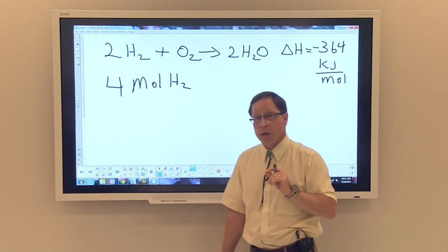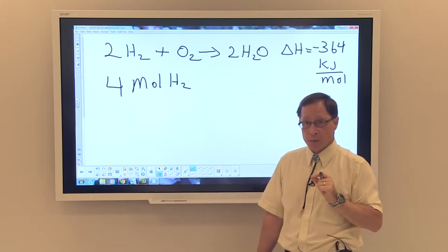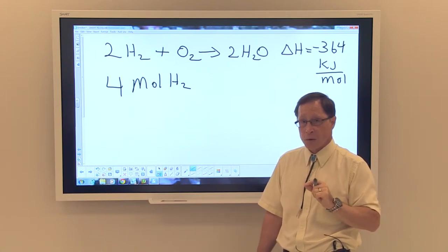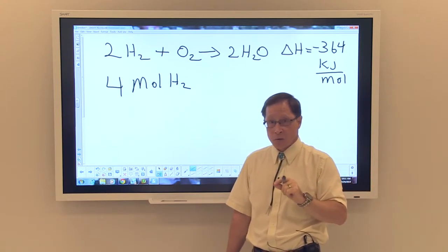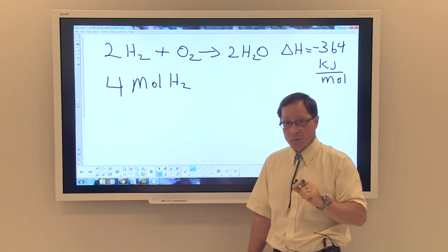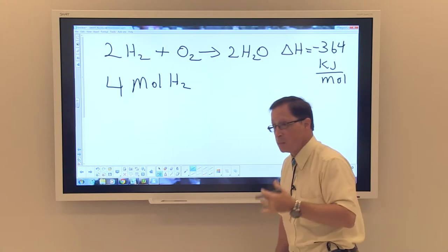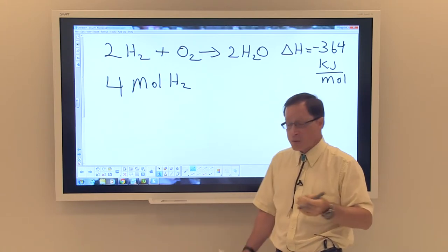How would we determine the amount of energy that we would get from using four moles of hydrogen? We need to understand here that when I say four moles of hydrogen, I'm saying that we have four moles of hydrogen and we have plenty of oxygen to react with it to completely convert it to water. Thus, hydrogen would not be left within our process.